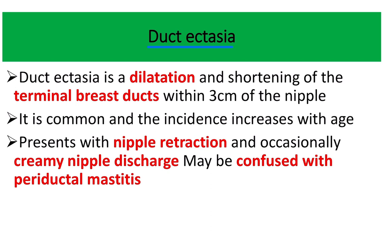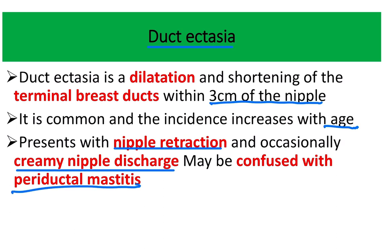Duct ectasia means dilatation — it is the dilatation of the terminal breast duct, within 3 centimeters of the nipple. It is common with increasing age and also has an association with smoking. It presents with nipple retraction and occasionally creamy nipple discharge, which may be confused with periductal mastitis. Both conditions are more common in smokers, and in duct ectasia the pathology is within the duct.